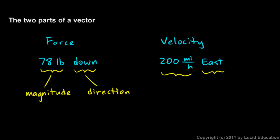So the 200 miles per hour in this case is the magnitude. And the east in this case is the direction. And every vector has those two parts of magnitude and direction. The magnitude tells us how much, and the direction tells us which way.